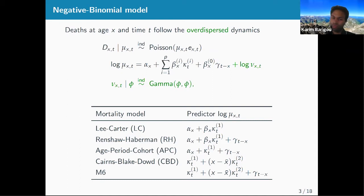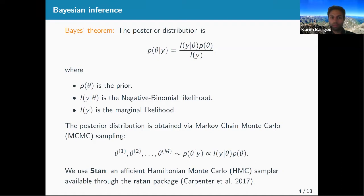We work in a Bayesian framework, so you specify the likelihood and the prior. You are interested in the posterior distribution, which is the likelihood times the prior up to a constant. We sample the posterior distribution using Markov Chain Monte Carlo, and more specifically we use STAN — a very efficient Hamiltonian Monte Carlo sampler already implemented in the RStan package. Our StanMomo package is built on top of RStan.